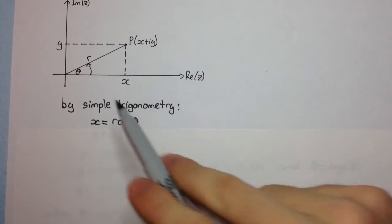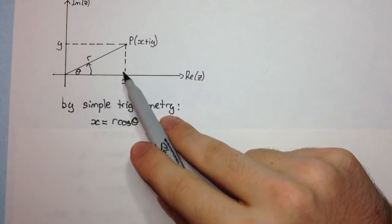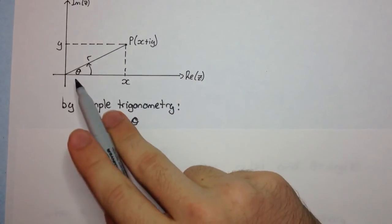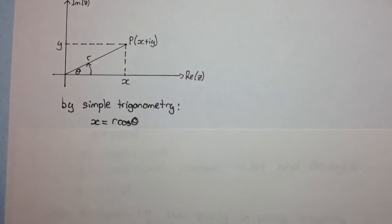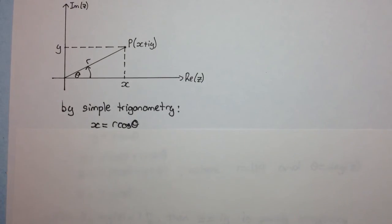Right, so we have x equals r cos theta. So if we looked at cos theta here, we'd get adjacent over hypotenuse, which would be x over r. And so from that, we can get x equals r cos theta.